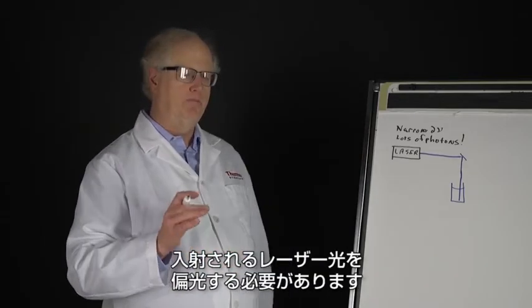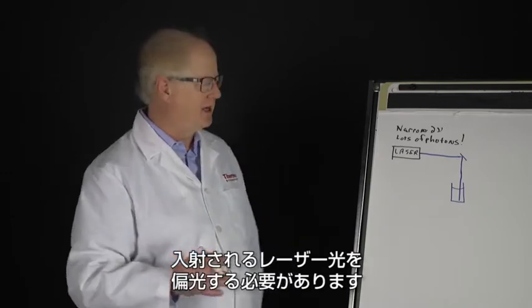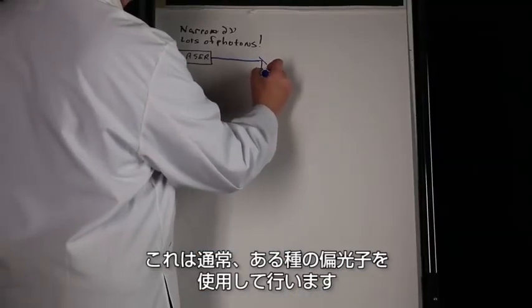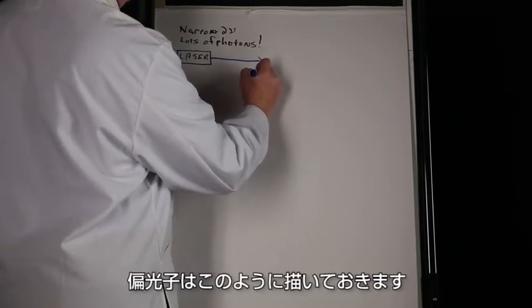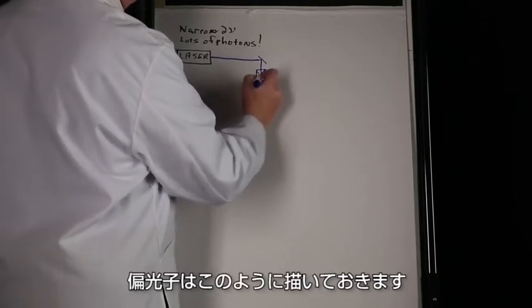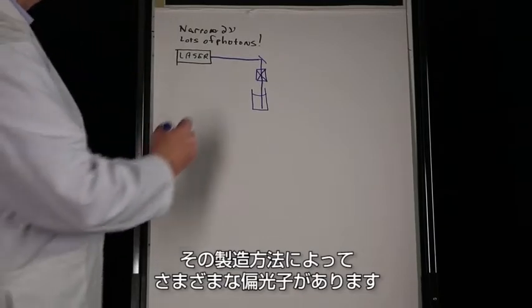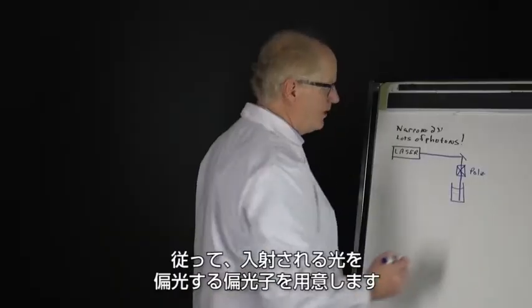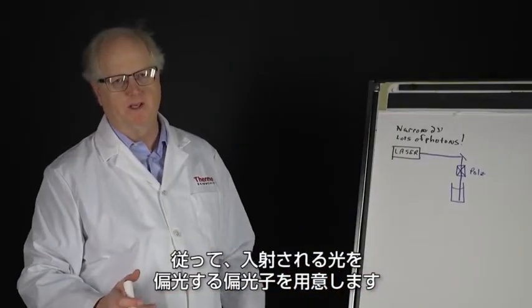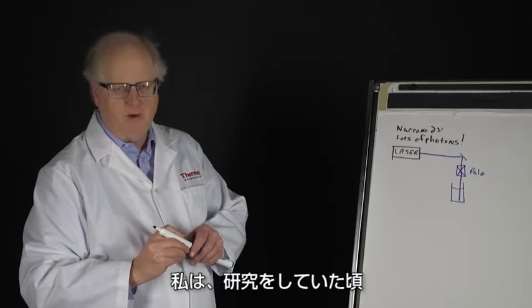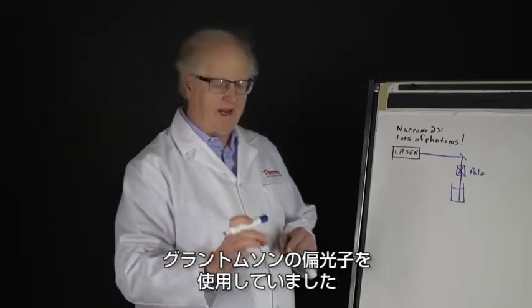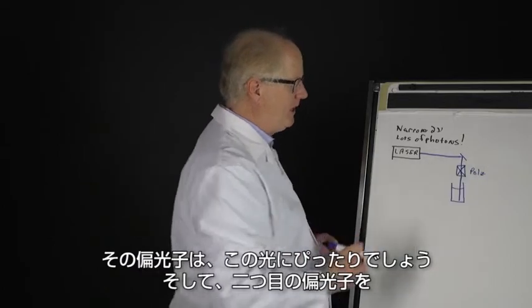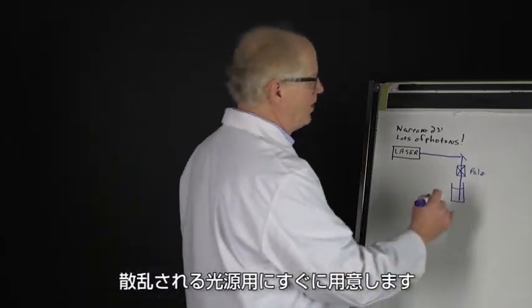Now I talked in the previous video about polarization, so I need to be able to polarize that incoming laser beam. This is typically done with some sort of polarizer, depending upon how it's made. There are different polarizers. So I have a polarizer polarizing the beam coming in. When I was doing my research we would have a Glan-Thompson polarizer that would fit right into the beam, and then a second one which we'll get to in a moment in the outcoming beam.